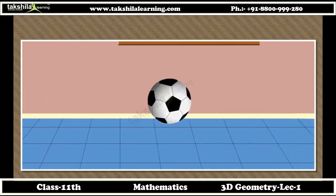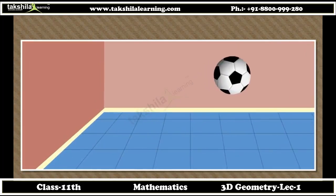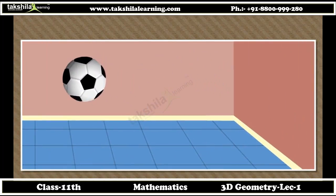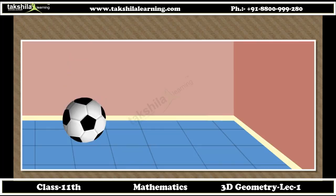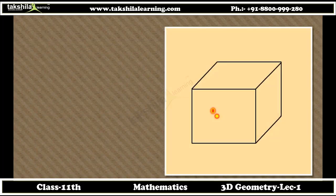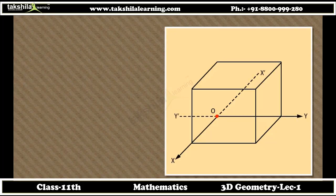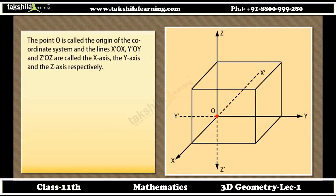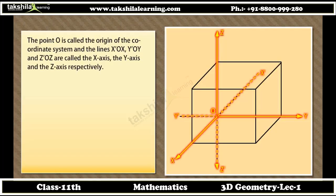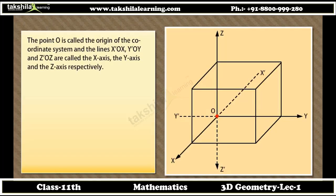Let us take an example of a bouncing ball in a room where one corner of the room is considered as the origin. We can take any corner of the room as the origin of reference, and relative to that, the coordinates of the point change. Thus, the origin can be taken arbitrarily at any point. Let us start with an arbitrary point O in space and draw three mutually perpendicular lines X-OX, Y-OY, and Z-OZ through O. The point O is called the origin of the coordinate system, and the lines X-OX, Y-OY, and Z-OZ are called the X-axis, Y-axis, and Z-axis respectively.